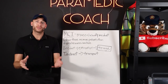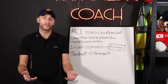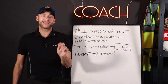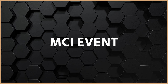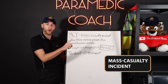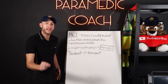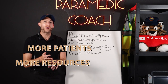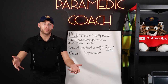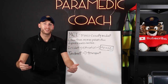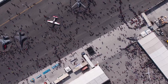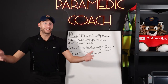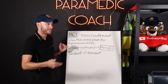Triage is finding out how severe the patient actually is. Where we do a mass amount of triage is at what we call an MCI event, a mass casualty incident. An MCI means there are more patients and more resources required than a typical call. We need help from other agencies — more resources, more assistance — because the number of patients and resources needed is so high. It's a special event, an MCI event.